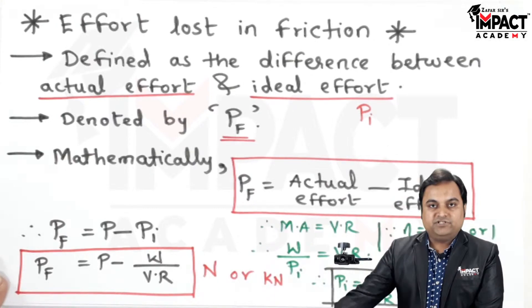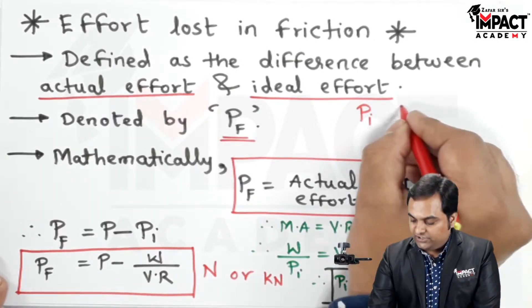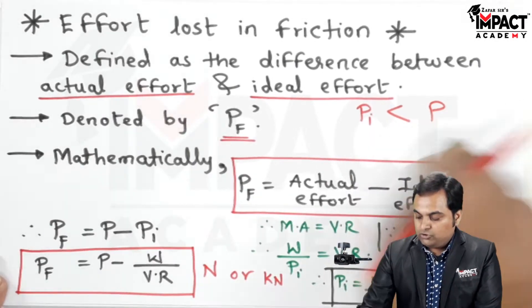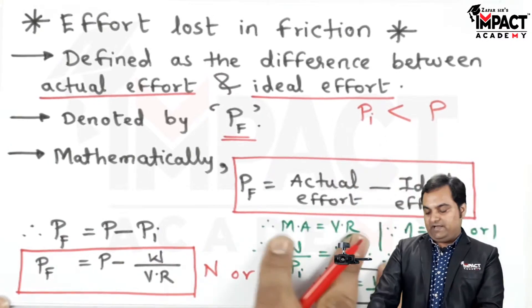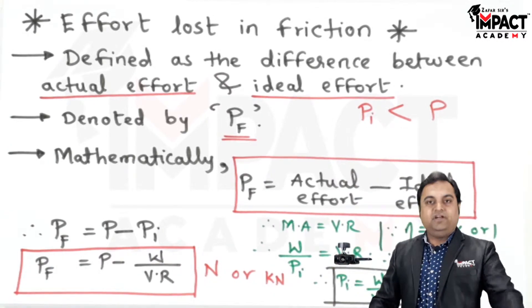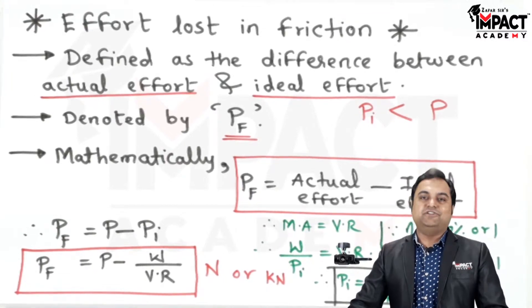Because the friction is absent in case of ideal machine compared to the actual machine, this actual effort is greater and their difference is called as the effort lost in friction or overcoming friction.